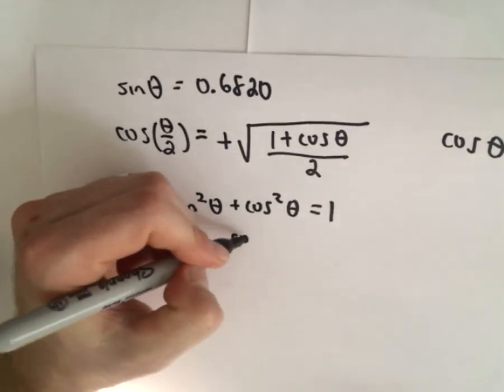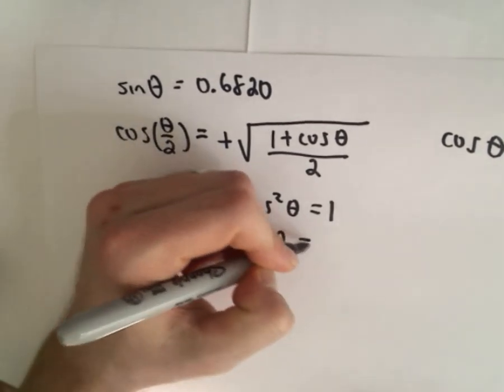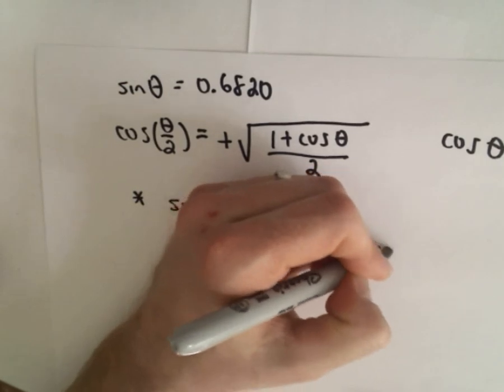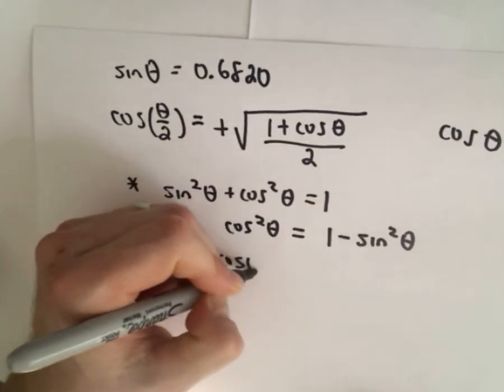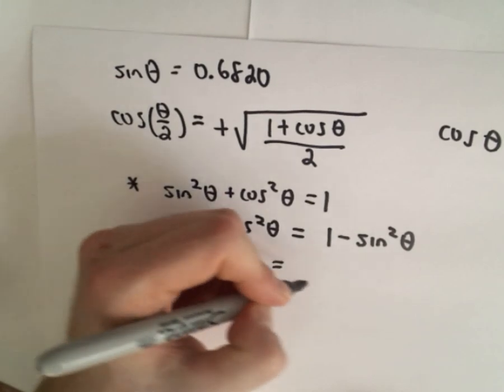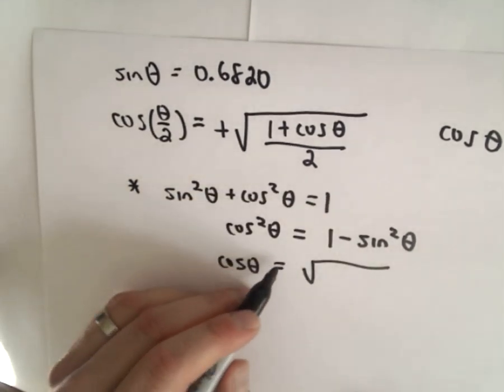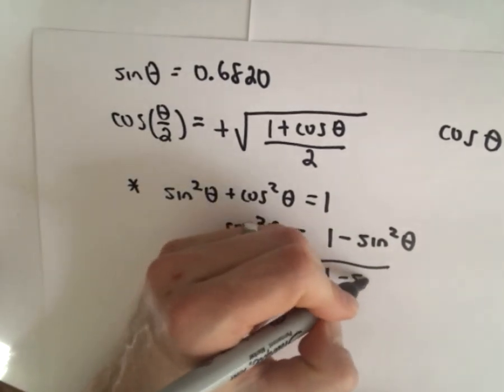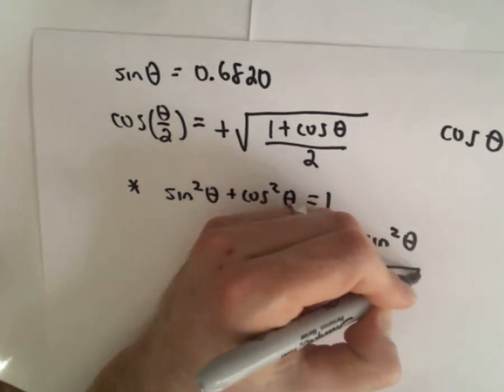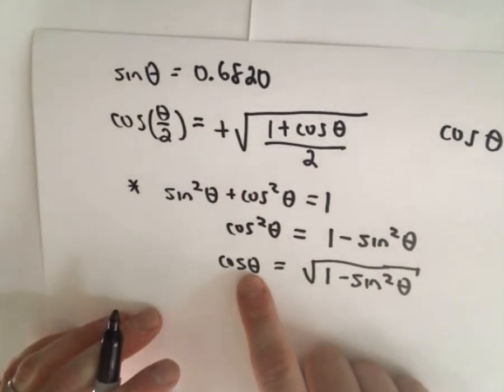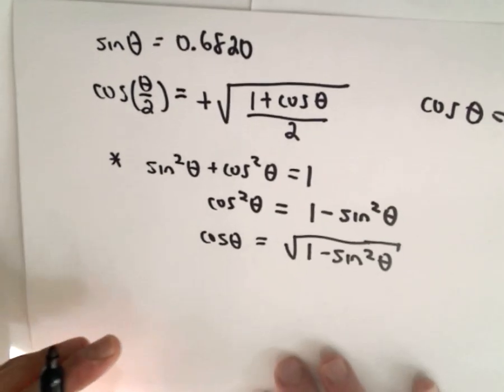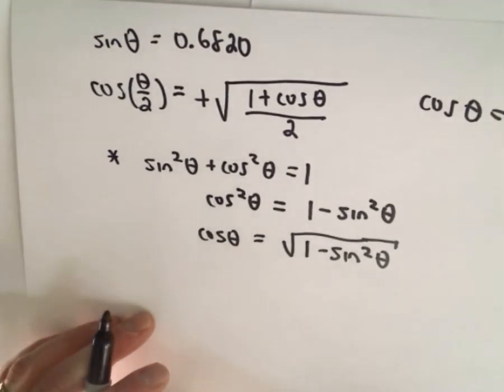So we've got that cosine squared theta would equal one minus sine squared theta. And if we take the square root of both sides, we would have cosine of theta equals, again normally you would have positive or negative one minus sine squared theta. But again, we deduced that theta is in quadrant one, so that we know that we have to keep the positive, the positive solution.